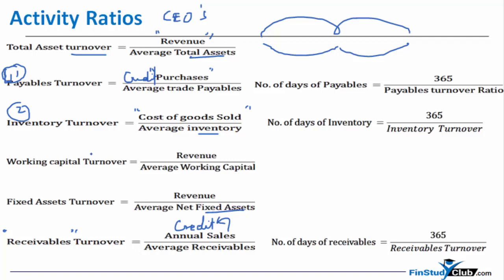For all other aspects it is going to be revenue, and it is better to take net revenue — net as in after excise, after all your discounts, indirect taxes, and so on. The last point on this slide is basically how to convert a turnover ratio, whose answer comes in times, to something expressed in number of days.